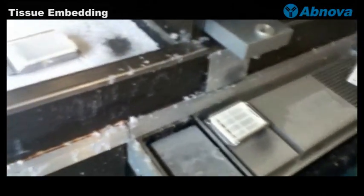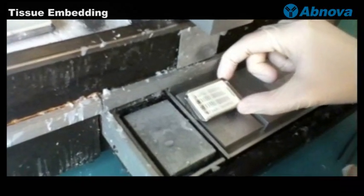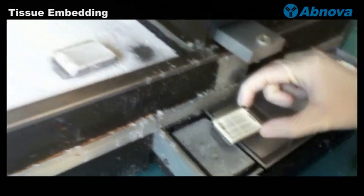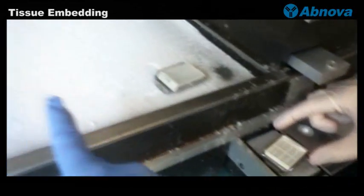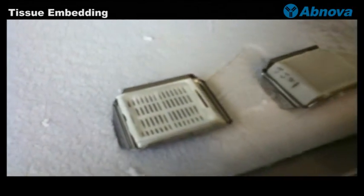After this, you put the whole cassette to the cold surface to solidify the whole block. And that will be it.